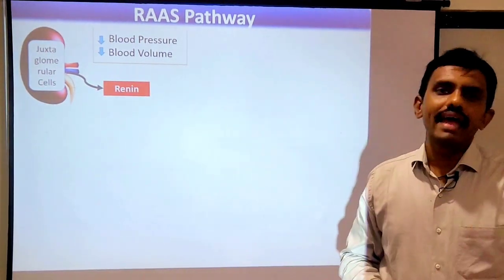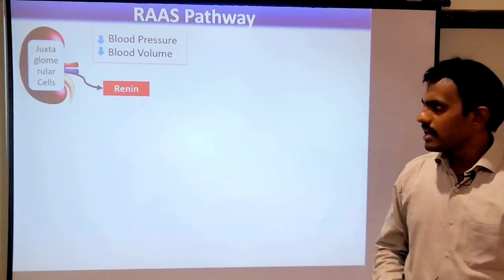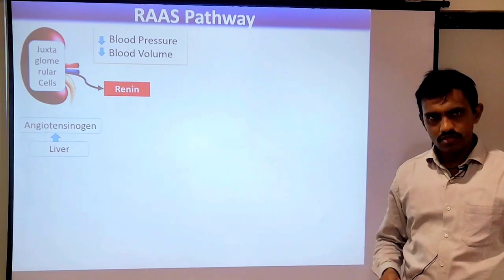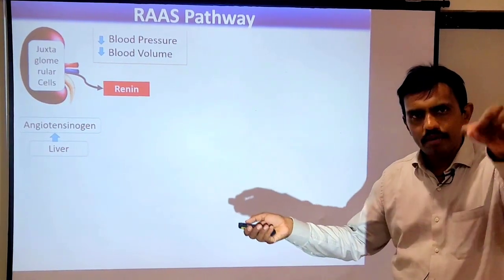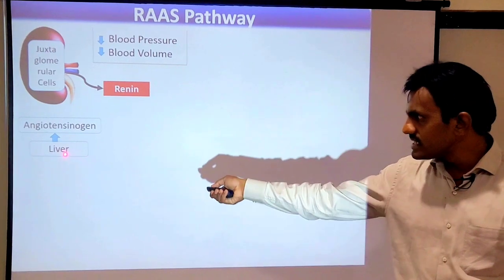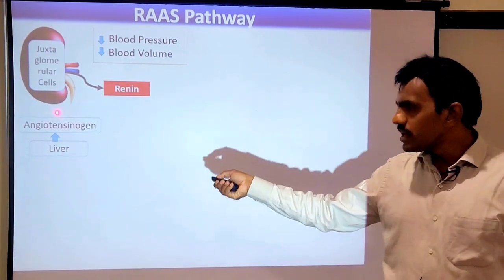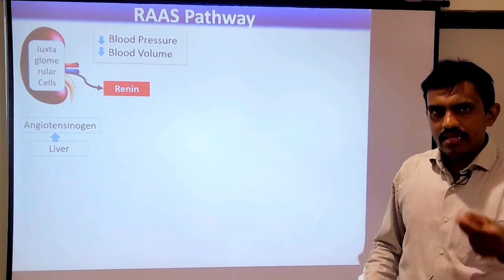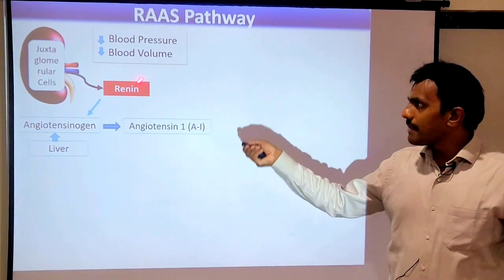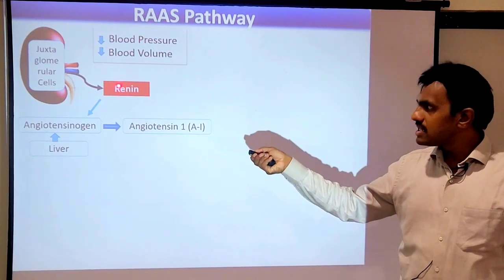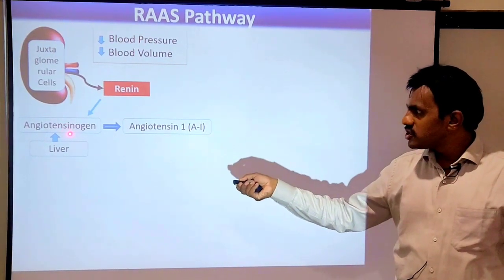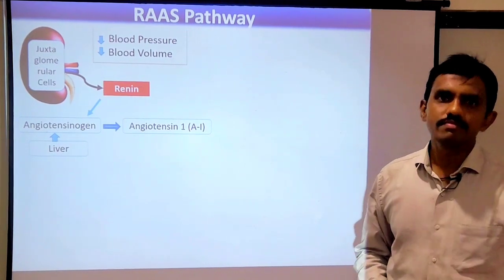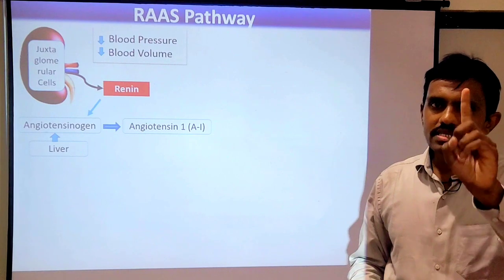But before renin starts acting, you have to understand another substance which is released by the liver, known as angiotensinogen. Renin comes in, and in the presence of renin, angiotensinogen converts to Angiotensin 1, also known as A1.